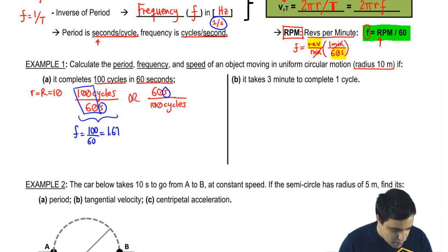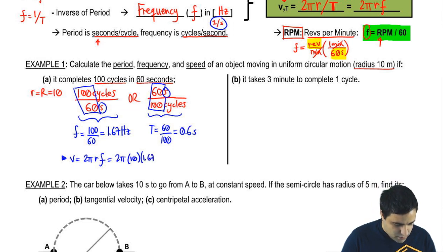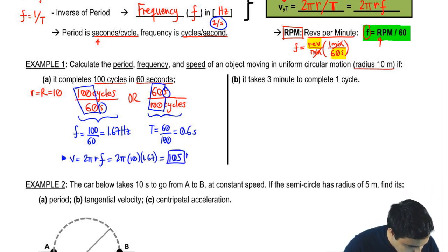And this gives us 1.67 hertz. If I wrote it this way, this fraction here, 60 over 100 would have been my period, which is 0.6 seconds. And then the last thing is I want speed. Speed is the magnitude of the velocity. So it's just the velocity without the direction, basically. So it is 2πr over T or times f. It doesn't matter. I'm going to pick the times f so I don't have to do a divide here. And then I'm going to get 2πr is 10. Frequency is 1.67. And if you plug this in, I got 104.9. I'm going to round this to 105 meters per second.